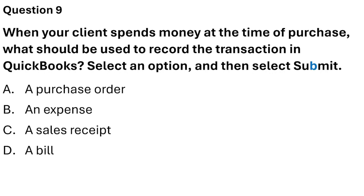Question 9. When your client spends money at the time of purchase, what should be used to record the transaction in QuickBooks? The four options are: Purchase Order, Expense, Sales Receipts, and Bill. The correct answer is Expense — Option B.